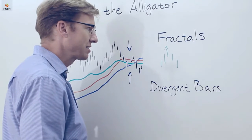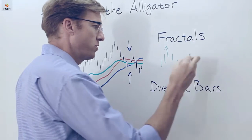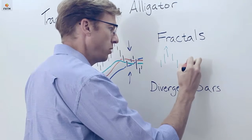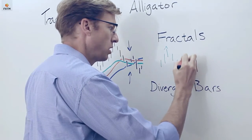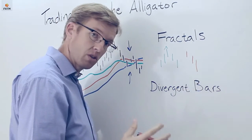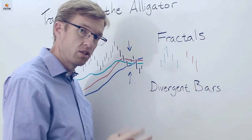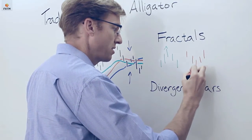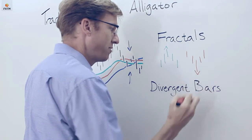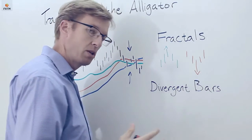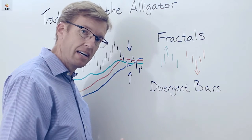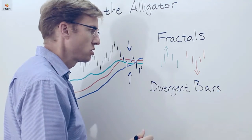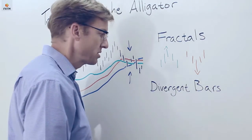A down fractal is just the reverse, where it has a low that is lower than the two lows that came before it and also lower than the two lows that come after it. We're going to be using fractals to identify trading triggers and signals as well as trailing stops.